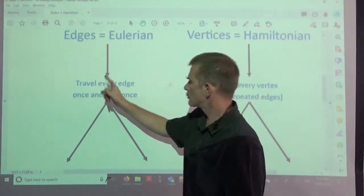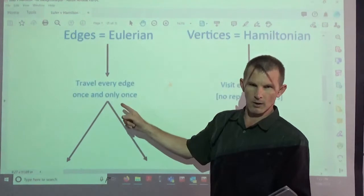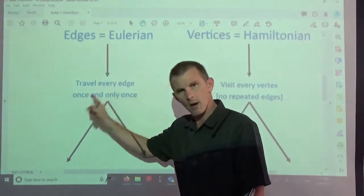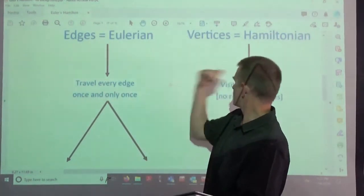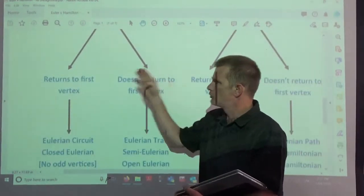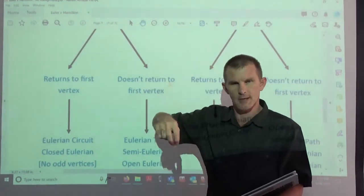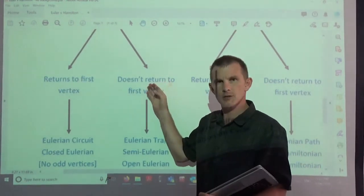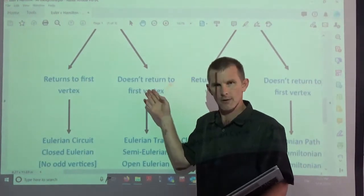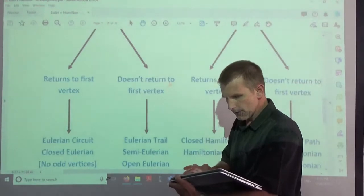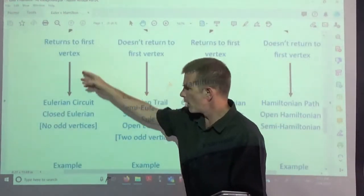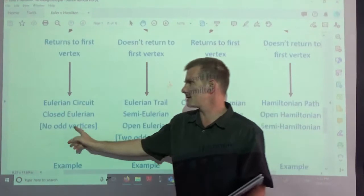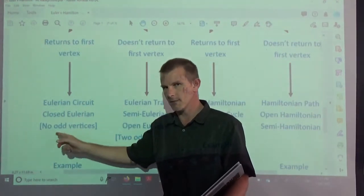Let's work on the left hand side here. Travel every edge once and only once. We don't want to street sweep the streets twice. Then we've got to decide: do we return to the first vertex where we started from on our last edge, or do we finish somewhere else? If we return, we've done an Eulerian circuit or a closed Euler.